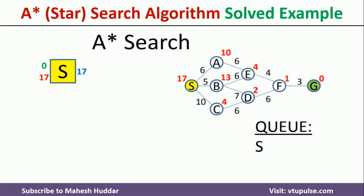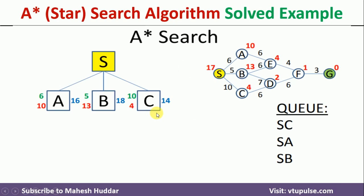I will start applying this formula to the graph. We start with node S because that is the initial node. The cost to go from S to S is 0, so G(n) is 0. The heuristic value of S is 17 — the probable distance cost to reach from S to G. Adding these two gives F = 17. From S, we have three possible paths: one towards A, second towards B, and third towards C. We will draw these and find the costs.